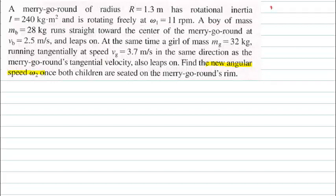Let's begin by interpreting the problem. We're being asked for the final angular speed, and we're given some information that involves some rotational inertia, some masses, and some locations. We know these people are jumping on at the merry-go-round's rim, so we know where they are. This problem looks quite a lot like a collision problem in linear mechanics, except now it's rotating objects interacting.